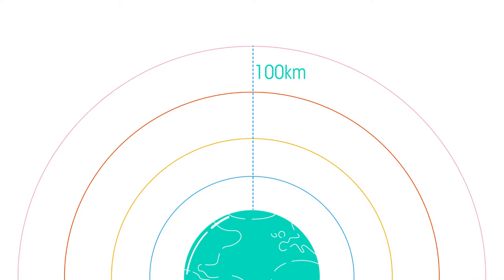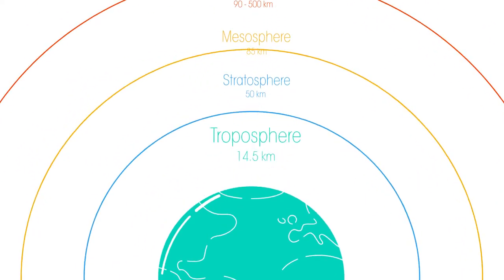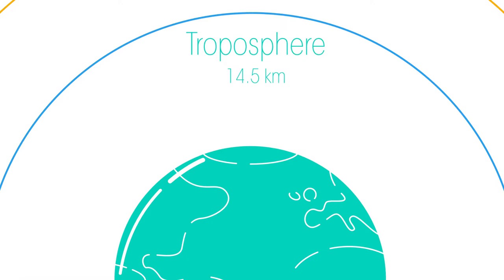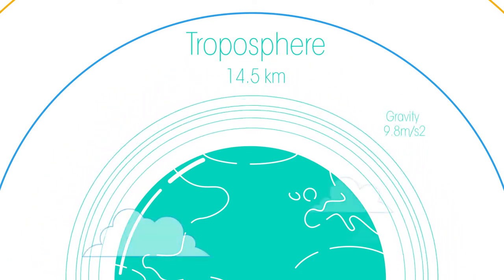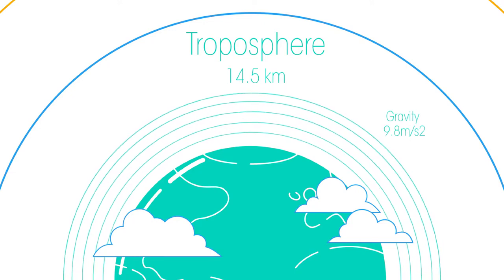The atmosphere is about 100km thick and is broken down into different layers. It starts with the troposphere, closest to the Earth, which extends to 14.5km. Thanks to gravity this is the most dense part and is where the clouds are found. Nearly all of our weather happens in here.